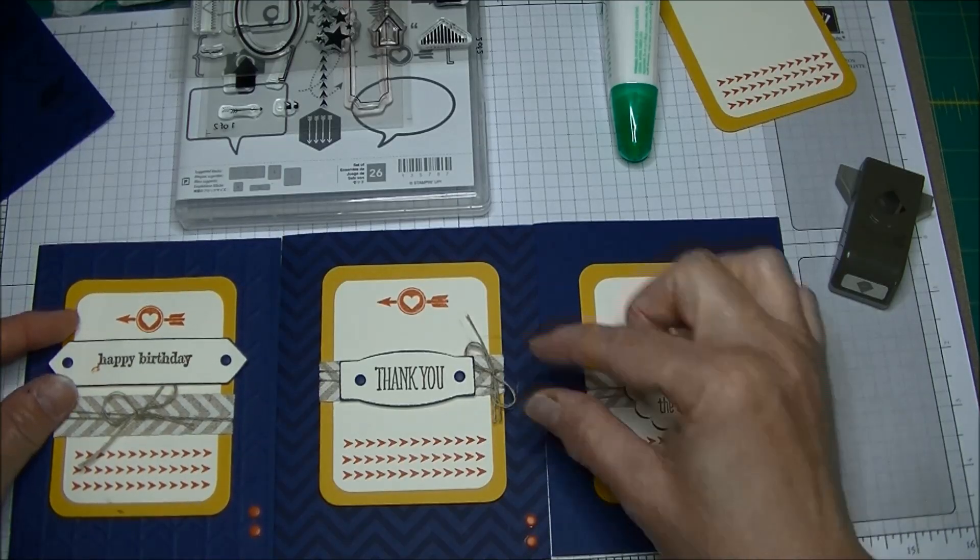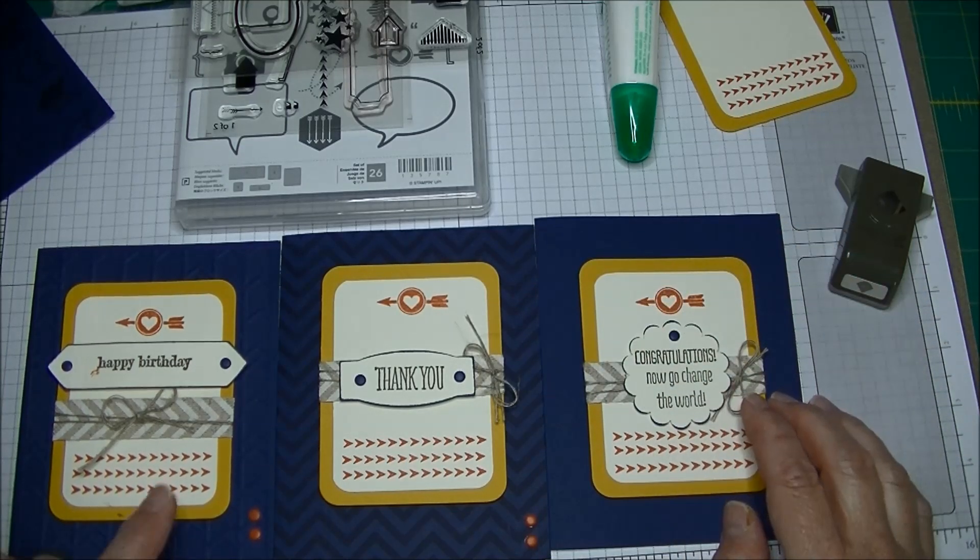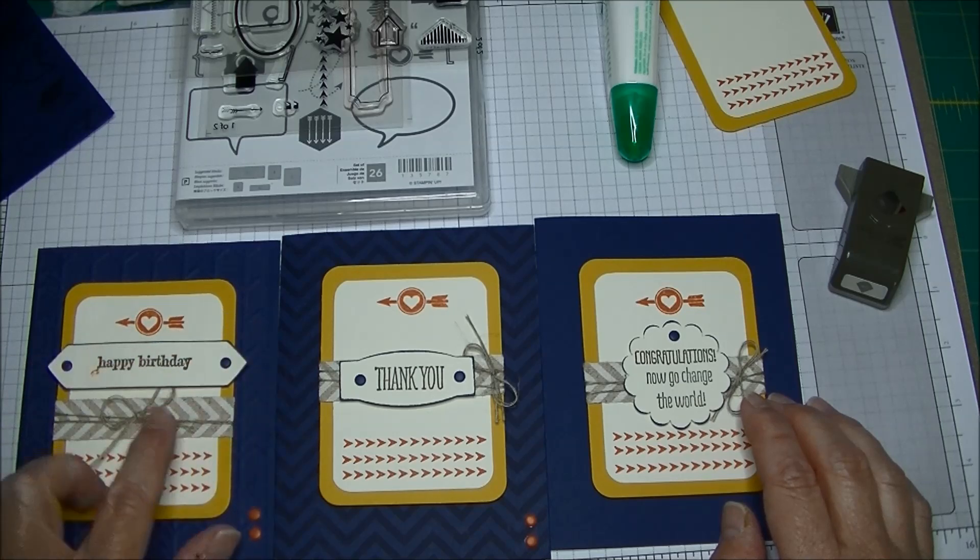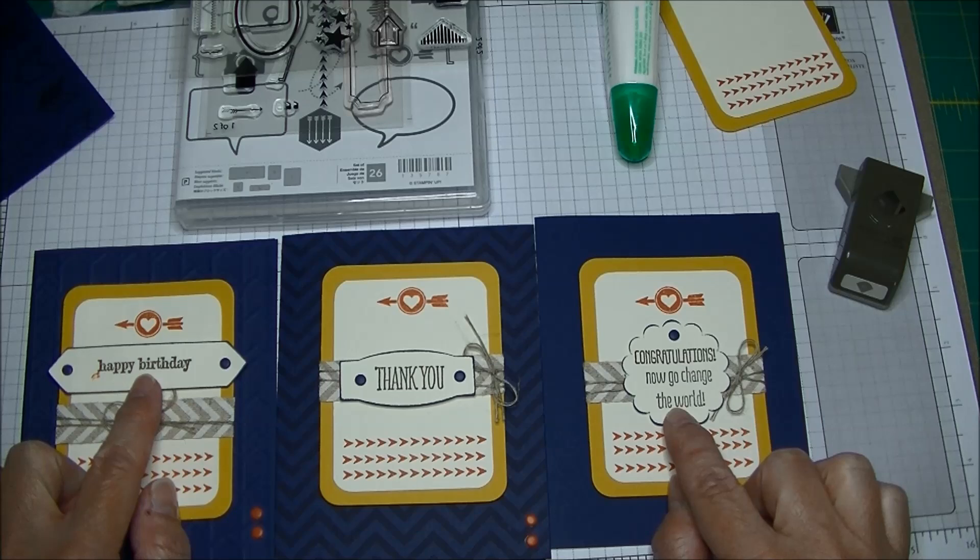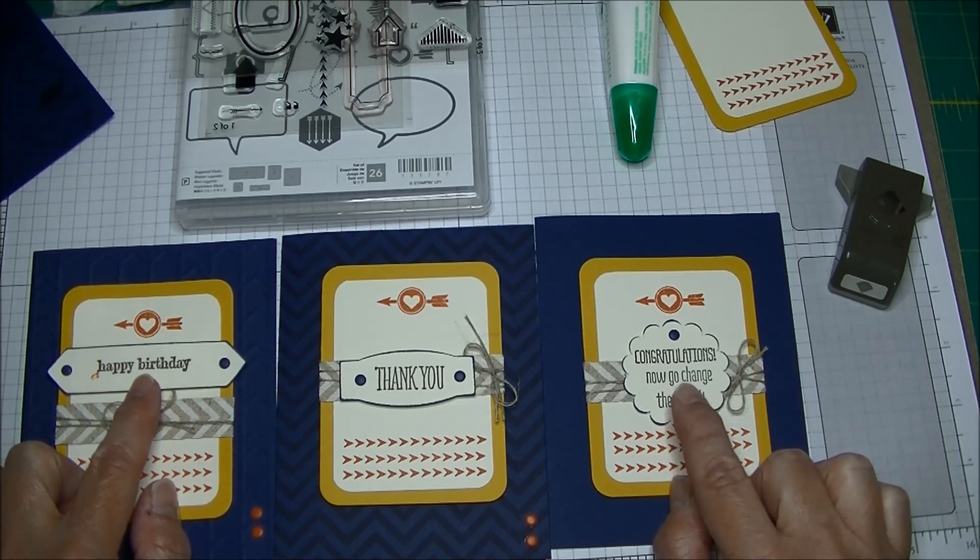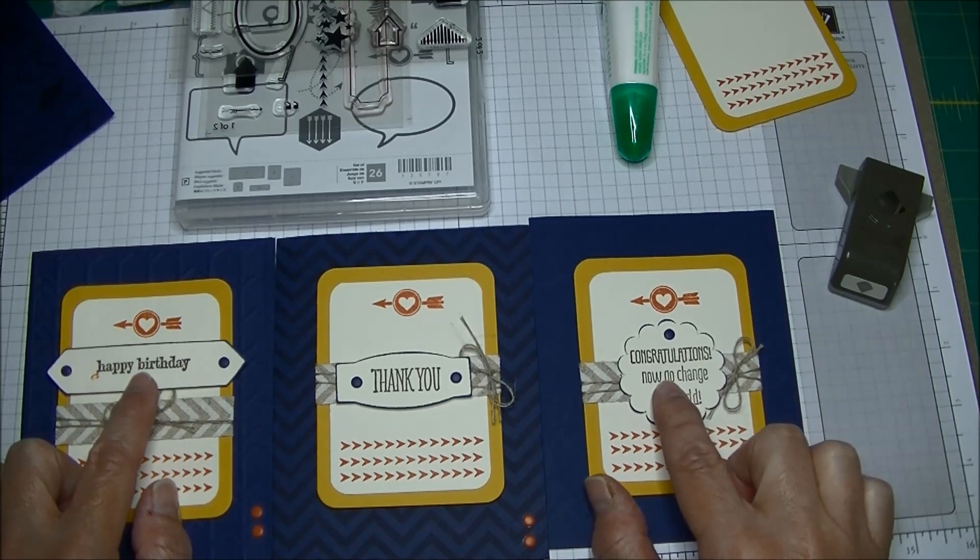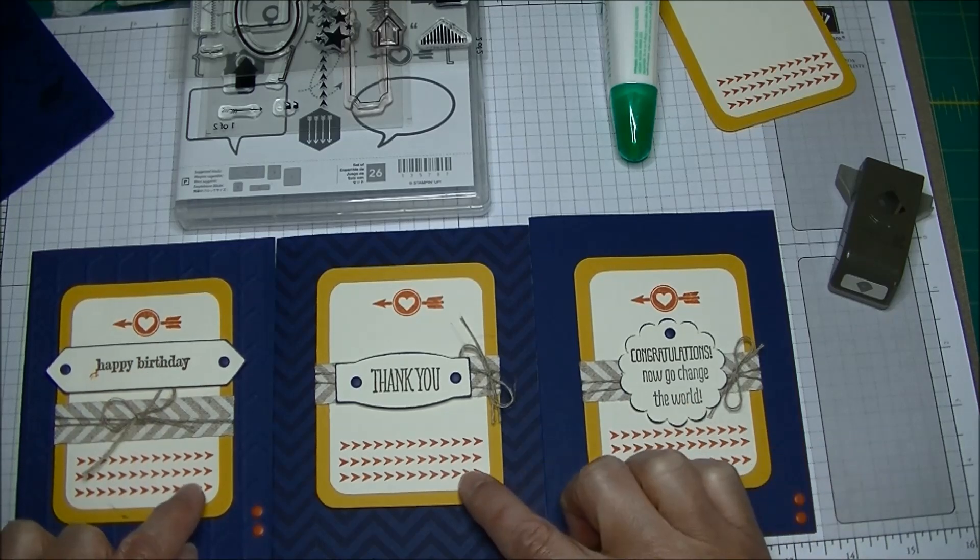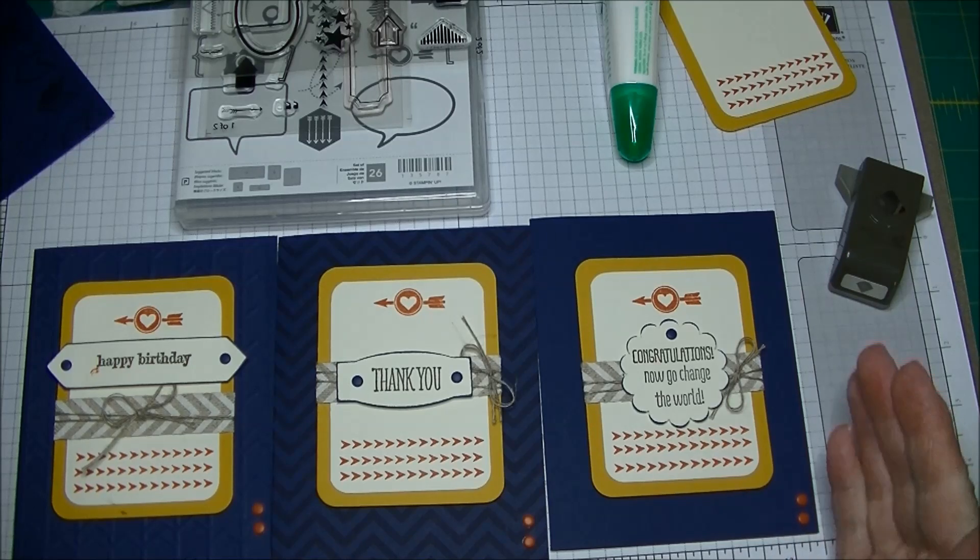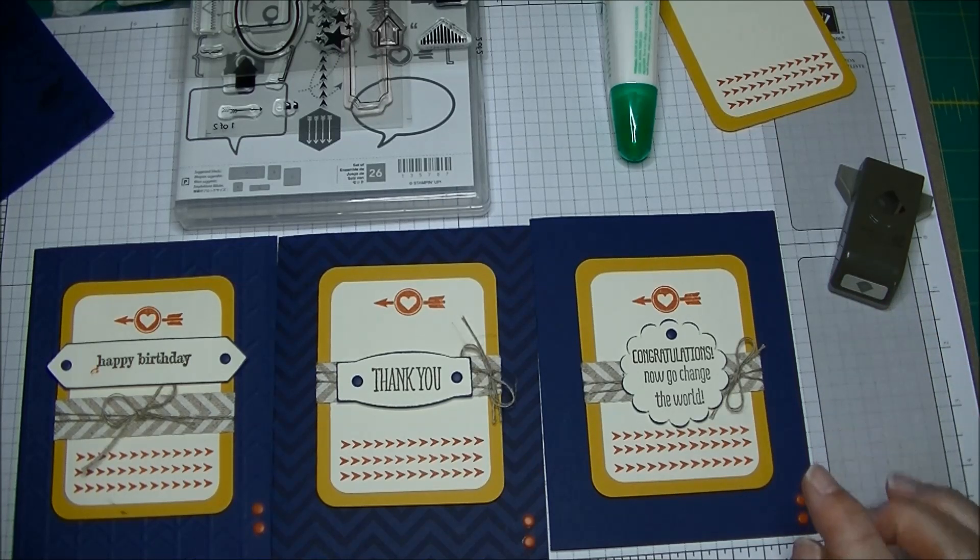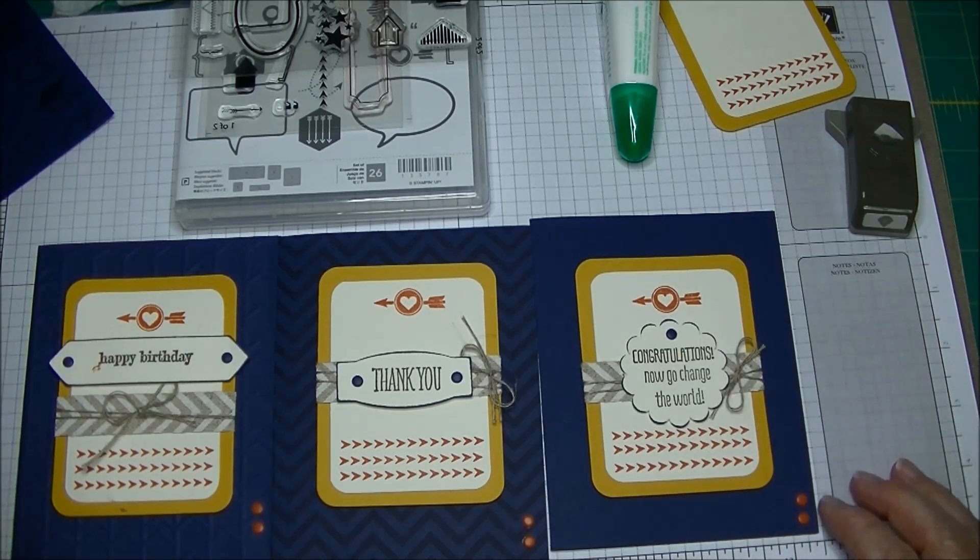As you can see the difference, these two are made from the framelits from the Project Life set. This is made from one of my punches and I've edged each one in Knight of Navy. Each one has some candy dots. The sentiments are all from the same Sneak Peek Sentiment set that will be coming out in the catalog on June 2nd, and they're all stamped in Soft Suede on Very Vanilla. Just to give you an idea of how the same card layout can be changed just a little bit depending on what tools you have and what sentiment you need to send.